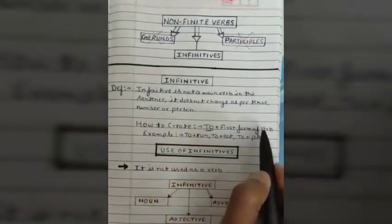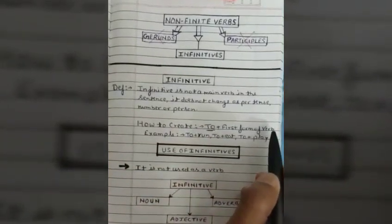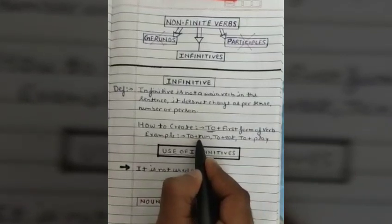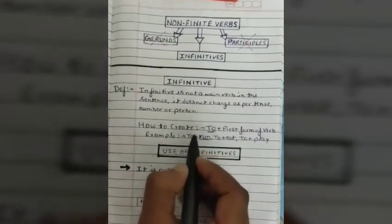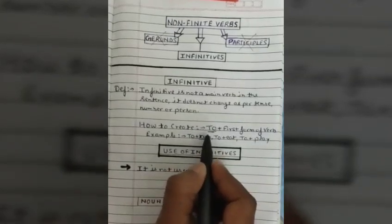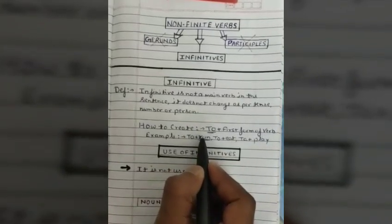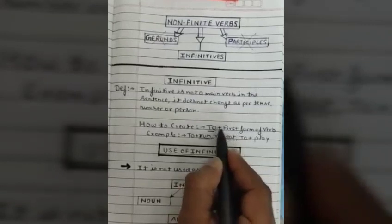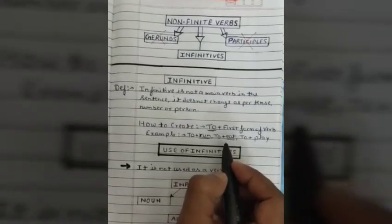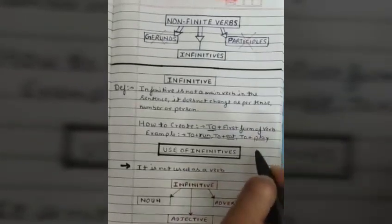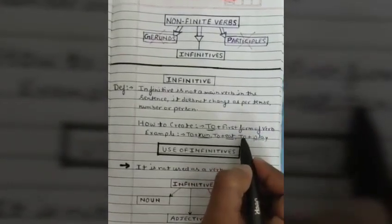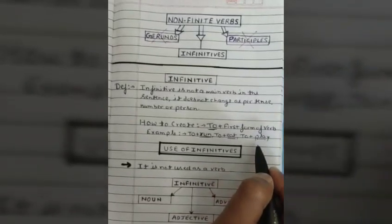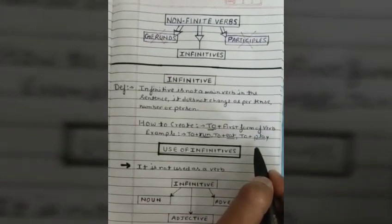Let's understand how to create an infinitive. 'To' plus the first form of the verb is known as infinitive. Here I have written some examples. Just like 'run' is the first form of the verb — when we add 'to,' it becomes 'to run,' so it is infinitive. 'Play' becomes 'to play,' also infinitive. So we have got the idea of infinitive verbs.